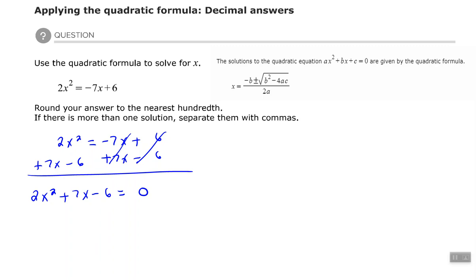So now I can identify my a, b, and c. So a = 2, b = 7, and c = -6. And then from there we do the same thing—we substitute. So x equals negative b...